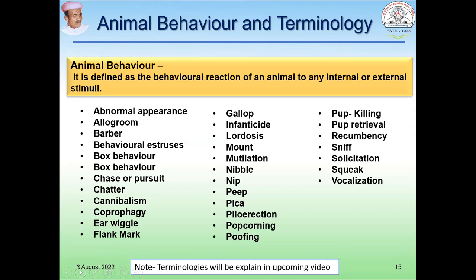There is animal behavior and terminologies related to it. Animal behavior is defined as the behavioral reaction of an animal to any internal or external stimuli. It includes abnormal appearance, allogroom, barbering, behavioral stress, box behavior, chase or pursuit, chatter, cannibalism, coprophagy, ear wiggle, flank mark, gallop, infanticide, lordosis, mount, mutilation, nibble, peep, pika, piloerection, popcorning, puffing, pup killing, and pup retrieval. These terminologies are explained in further videos.